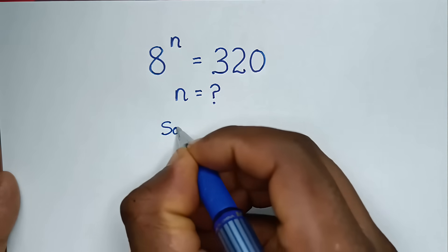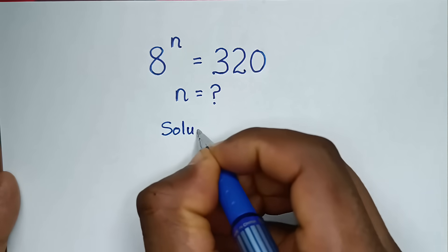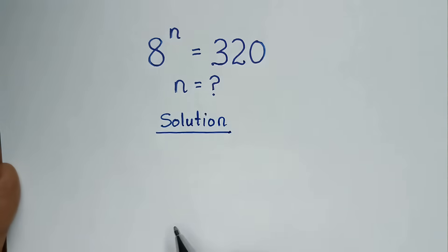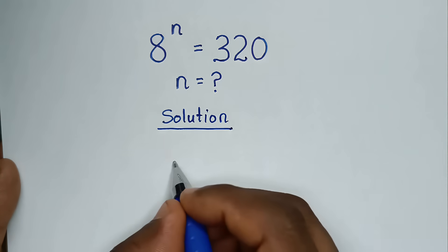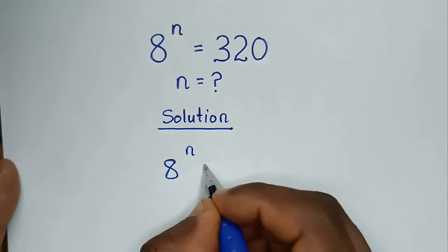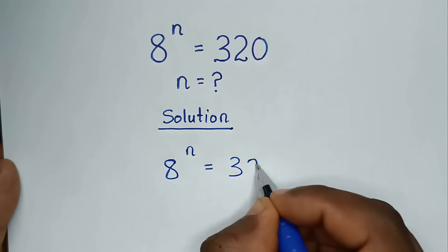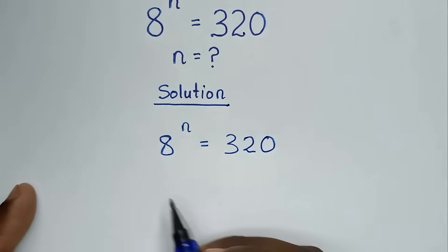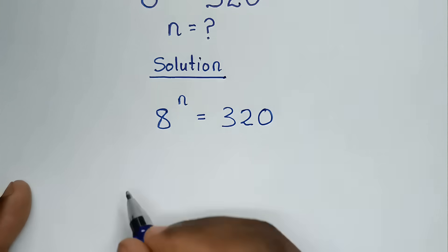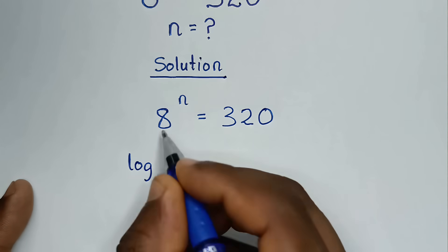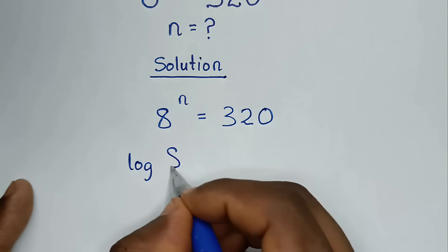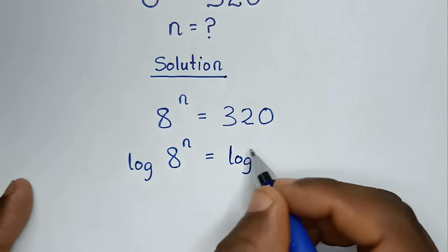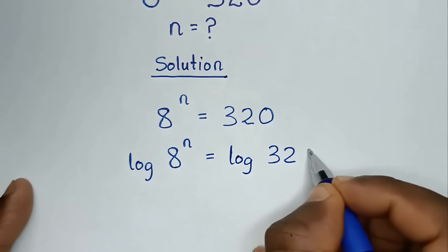Solution. From our problem, which is 8 power n is equal to 320, in the first step we'll apply log to both sides. So it will be log of 8 power n is equal to log of 320.